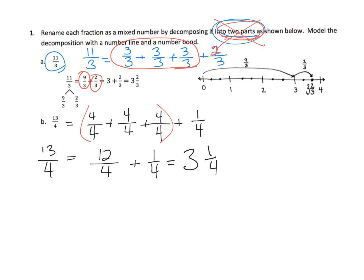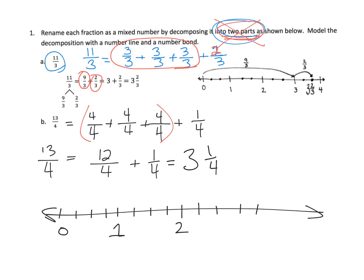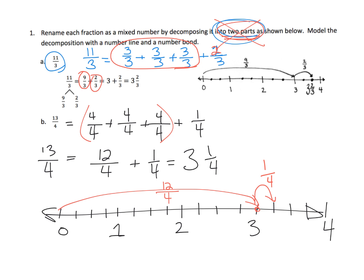It says to model this with a number line. Starting at zero, counting by fourths: four-fourths is one whole, eight-fourths is another whole, twelve-fourths is another whole. We went twelve-fourths, which puts us at three, plus one more fourth — because we needed thirteen-fourths altogether — so our answer is three and one-fourth.